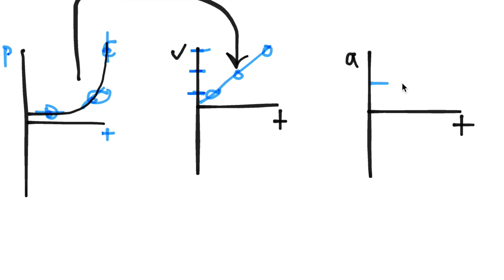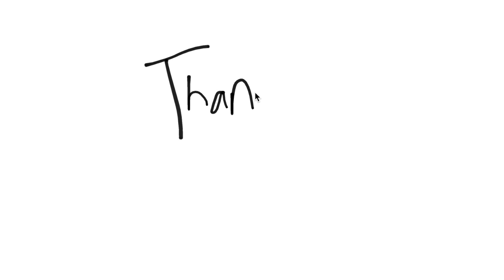We can see that the acceleration is going to be a positive constant, because in the velocity-time graph the slope is a positive constant. That's how we know what the acceleration graph looks like. So now you should know the basics of using, interpreting, and analyzing different kinematic curves.